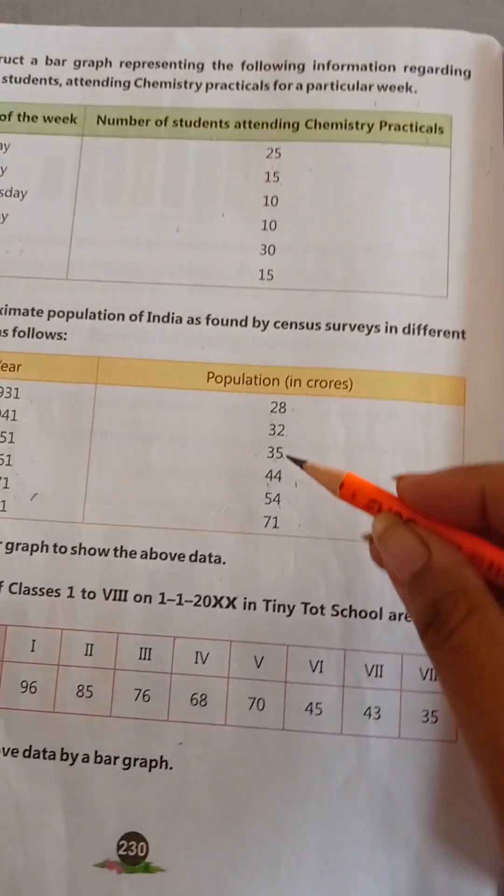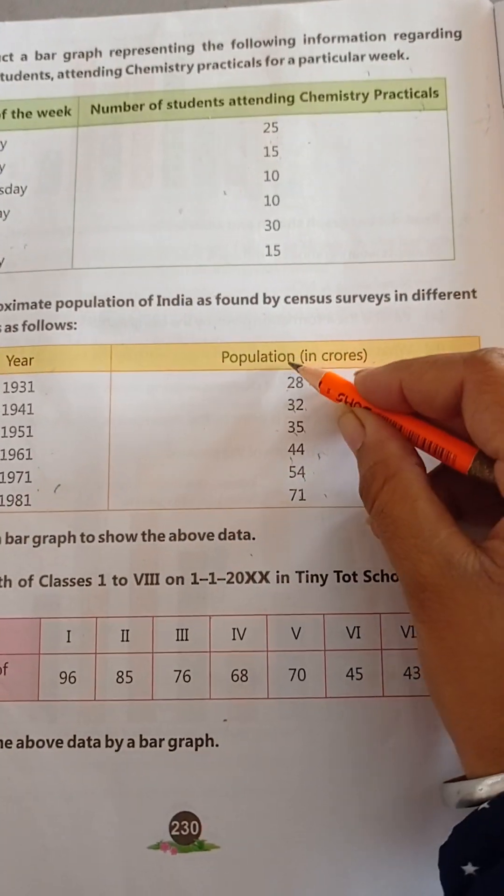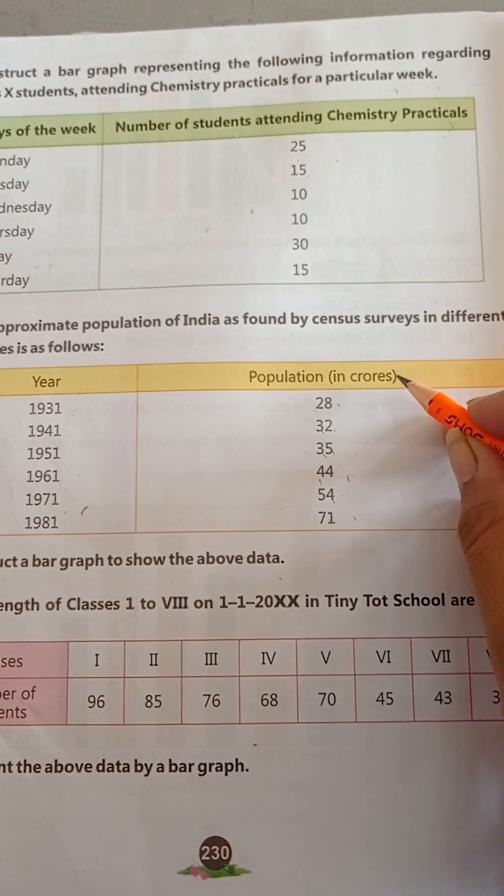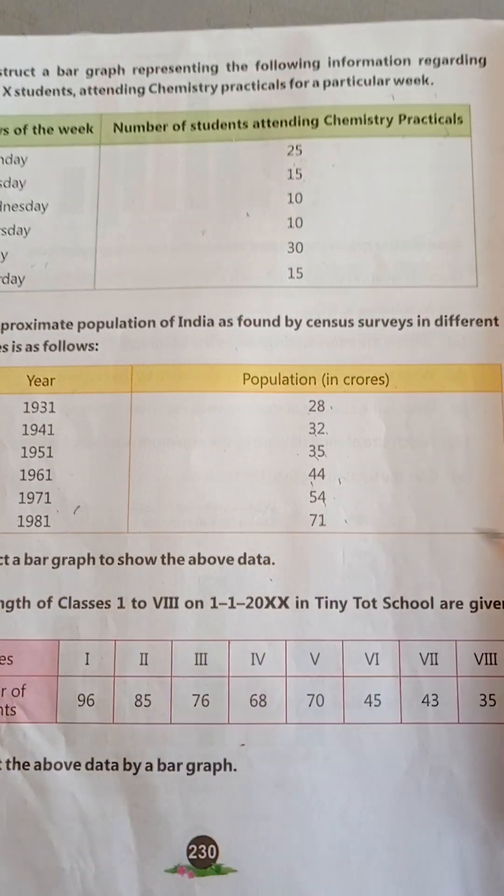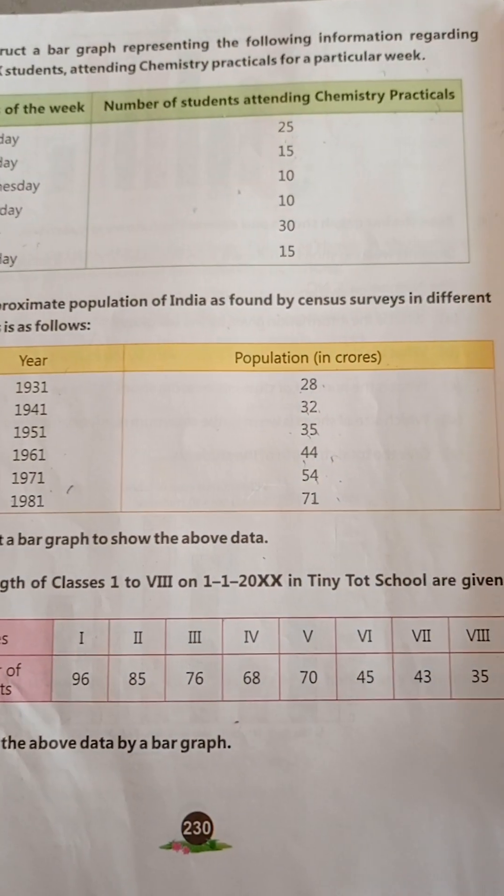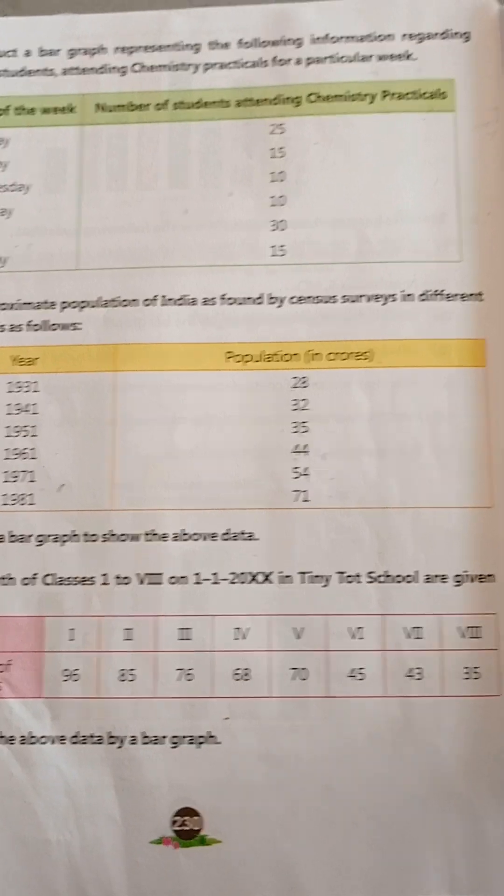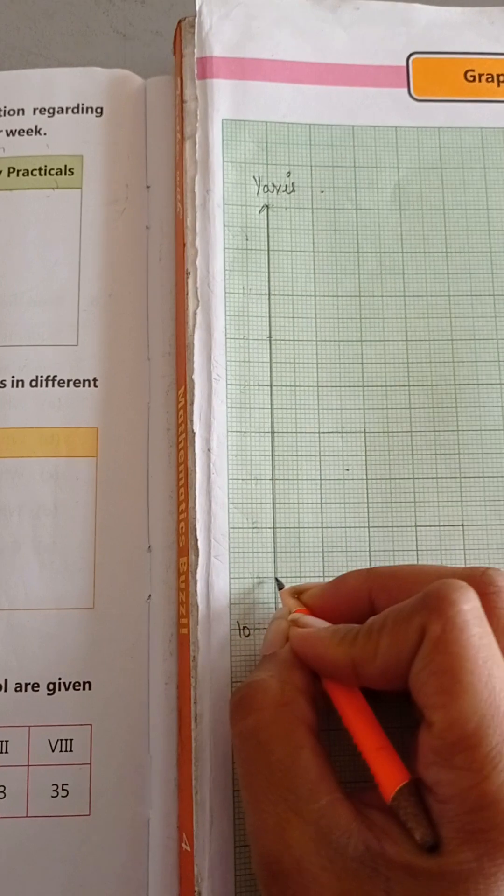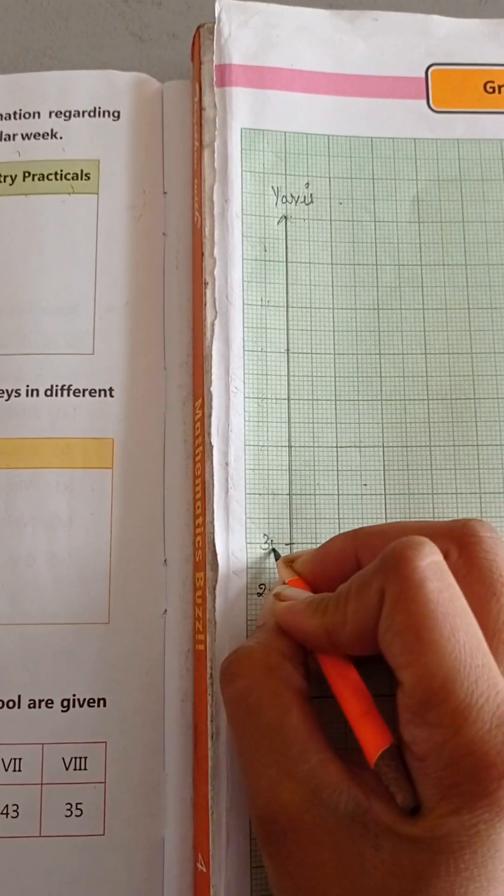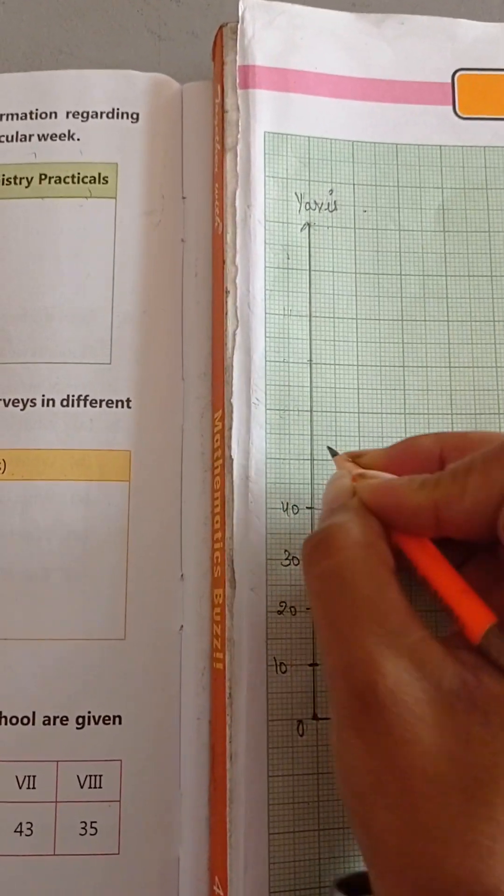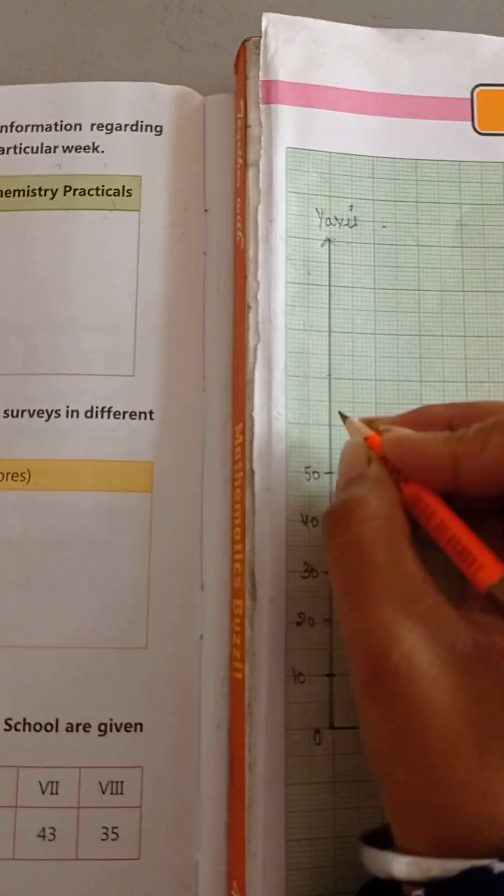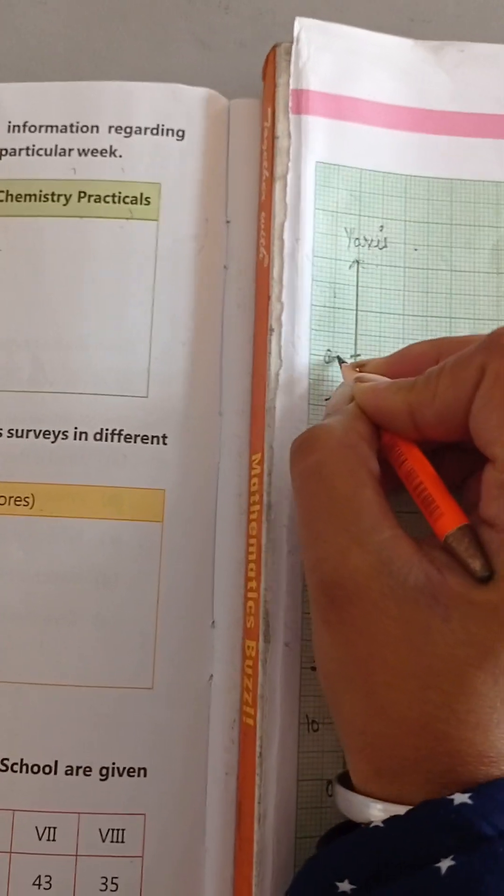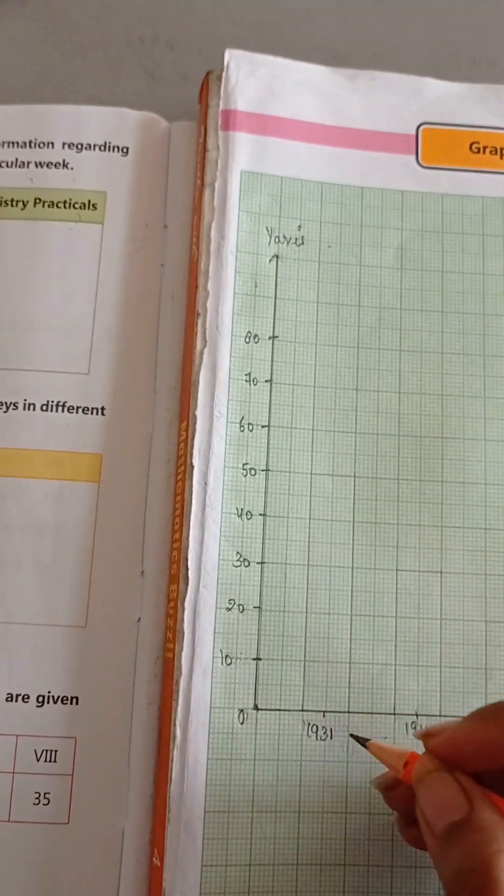Now, on the y-axis, you have to mention population in crores. But first of all, you have to take a proper distance. In this question number 8, here I take the distance of 10 cm. 10, 20, 30, 40, 50, 60, 70, 80 and so on. Here it is population in curves.